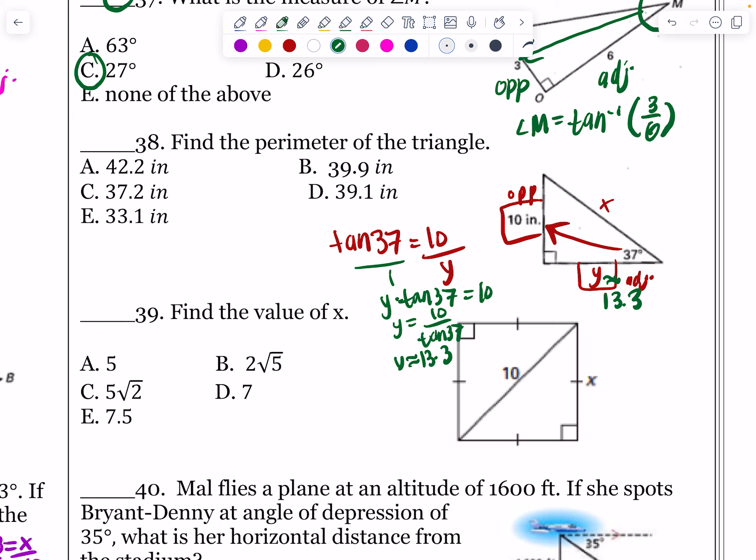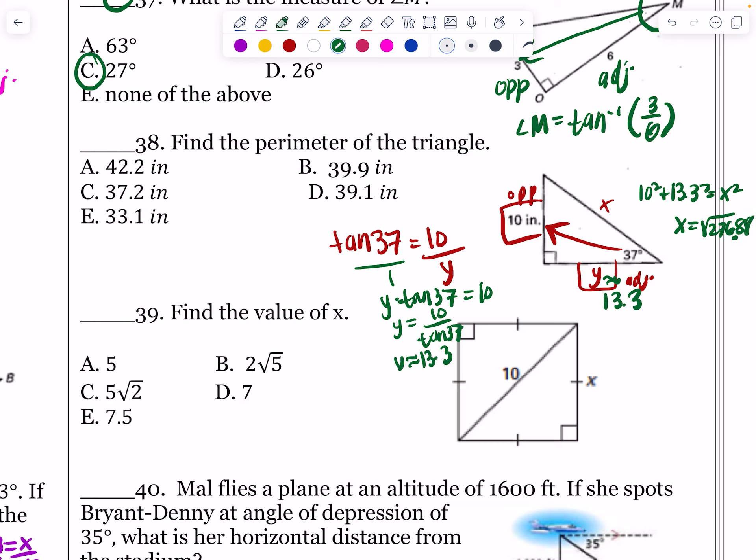I might have to erase some of this in a second. So Y is about 13.3. At this point, I could either use Pythagorean theorem or I could use trig again. I'm going to go 10 squared plus about 13.3 squared is going to be equal to X squared. X is going to be equal to the square root of 276.89. My X value is going to be about 16.6. So what is my perimeter? It's going to be 16.6 plus about 13.3 plus 10. That is going to give me around 39.9, so right around 40. Which one says that? That's going to be answer choice B. 39.9 inches would be my perimeter of this shape. Remember that perimeter is where you add all three sides together. So we use trig and Pythagorean theorem. We could have used trig twice.